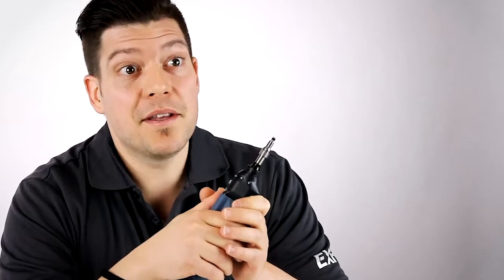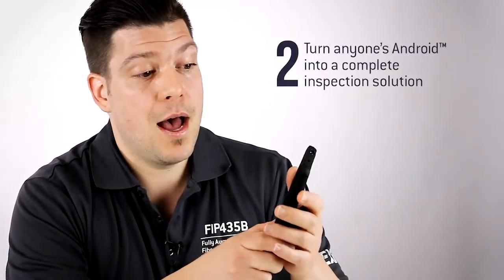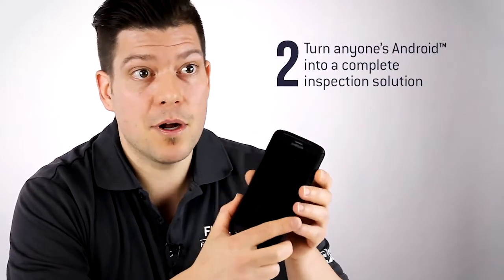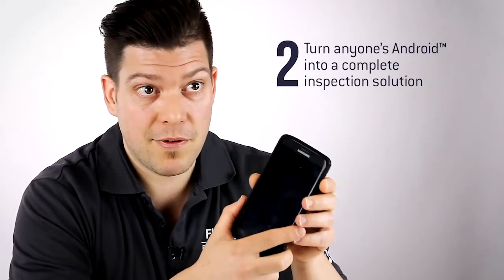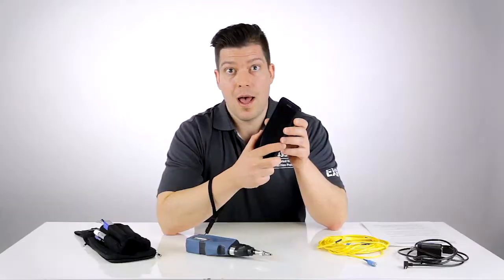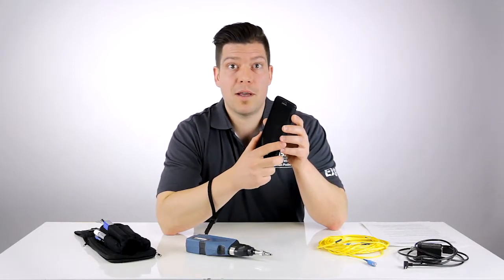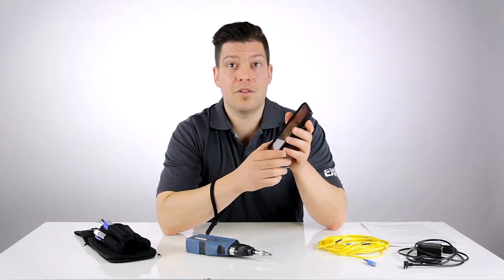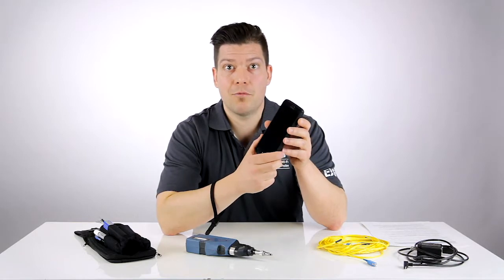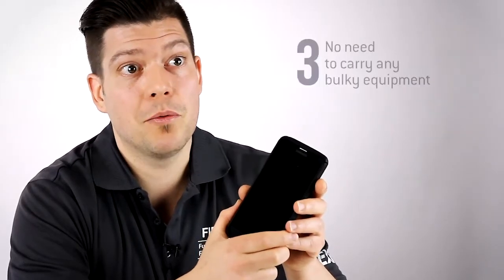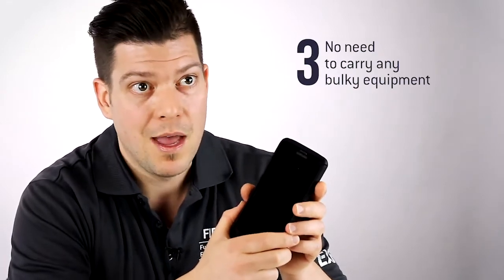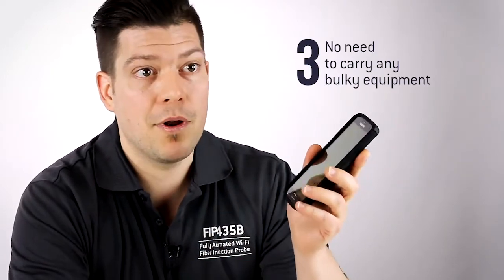The fact that the inspection software also runs on an Android device brings a lot of benefits. First and foremost, that means you can turn anyone's phone or tablet into a fully fledged fiber inspection solution, which means there's absolutely no compromise that has been done in the design of the software application running on the smart device. The other benefit is also the fact that you don't need to carry any bulky equipment. You just need to go with your phone and the probe.